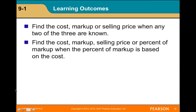There are two learning outcomes in Section 9-1. First, find the cost, markup, or selling price when any two of the three are known. Second, find the cost, markup, and selling price, or percent of markup when the percent of markup is based on the cost.